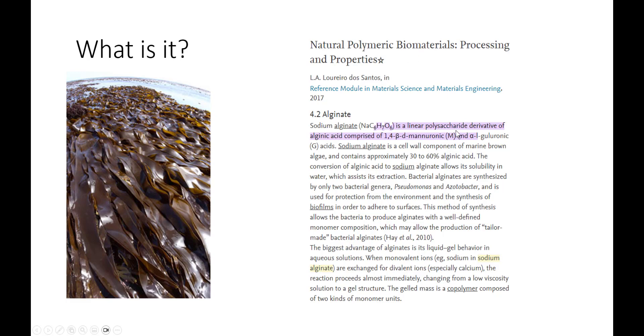As the source natural polymeric biomaterials tells us, sodium alginate is a linear polysaccharide derived of alginic acid. You know what, don't worry about this. This is a basic chemistry class. Basically all you need to know is that it's a type of polysaccharide, or a polymeric sugar.